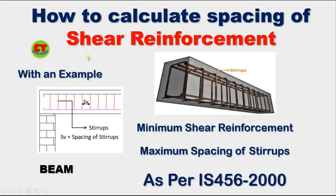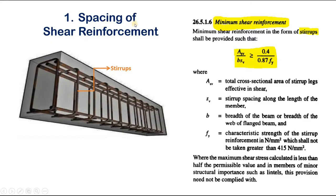In the previous video we learned about shear reinforcement and the purpose of providing shear reinforcement in RCC structures. Now let us see the minimum shear reinforcement, maximum spacing of stirrups as per IS 456:2000 code, and how to calculate the spacing of shear reinforcement with an example. First is spacing of shear reinforcement using the minimum shear reinforcement formula given in IS 456 clause 26.5.1.6.